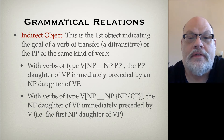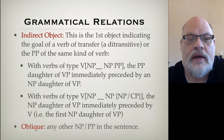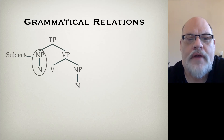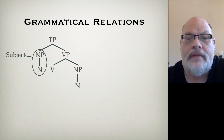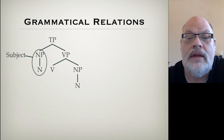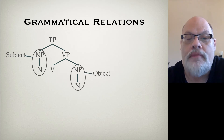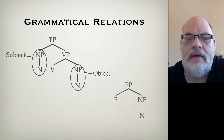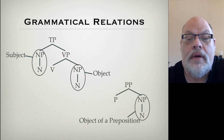So let's look at some trees to see what this looks like. Here's our TP. The noun phrase that's immediately dominated by the TP — that's the subject. The noun phrase that's immediately dominated by the VP, when you only have one, is the object. If you have a prepositional phrase, the noun phrase that's dominated by the PP — that's the object of a preposition.